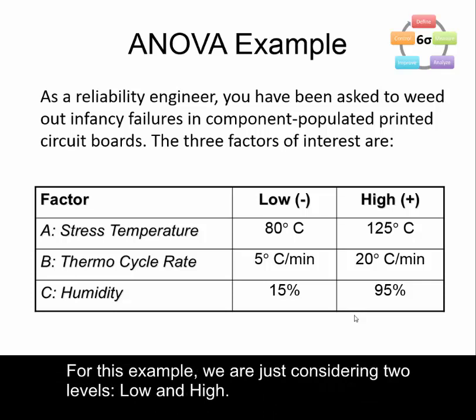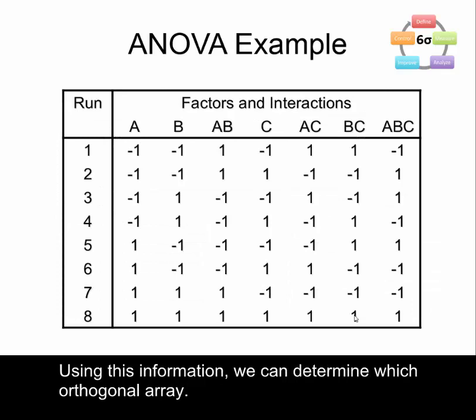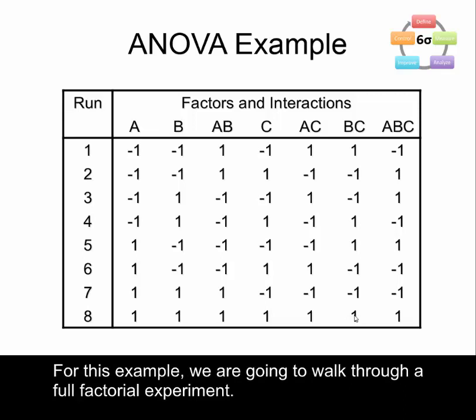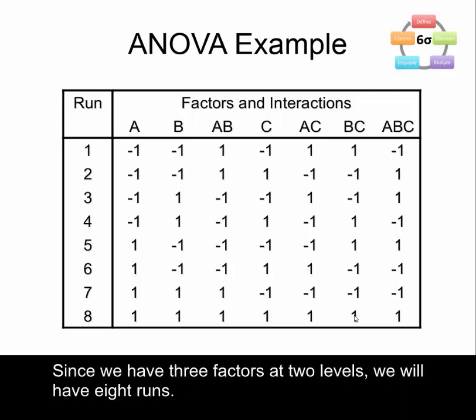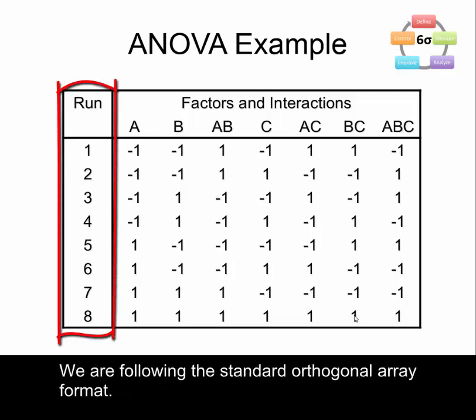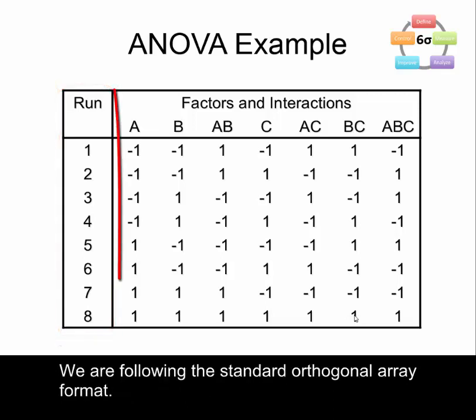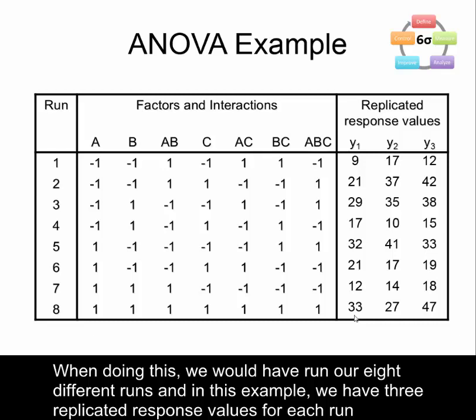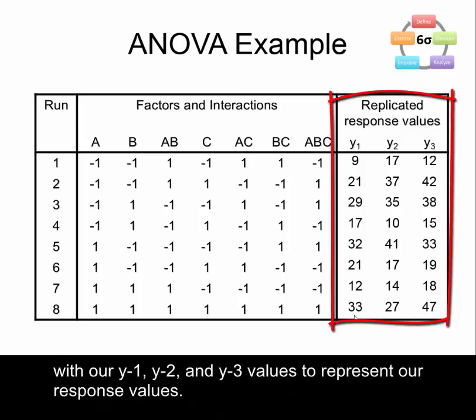For this example we're just considering two levels: low and high. Using this information we can determine which orthogonal array, and for this example we're going to walk through a full factorial experiment. Since we have three factors at two levels we'll have eight runs, following the standard orthogonal array format. When doing this we would have run our eight different runs, and in this example we have three replicated response values for each run — y1, y2, and y3.